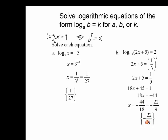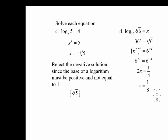We solve for x by subtracting 45 and dividing by 18 from both sides, getting x equal to minus 22 over 9. Once again, you're converting the logarithm into its exponential to solve for x. Another example: solve log of 5 equal to 4. This time you're looking for the base. You need to know how to convert log of y with base x equal to c into exponential form.